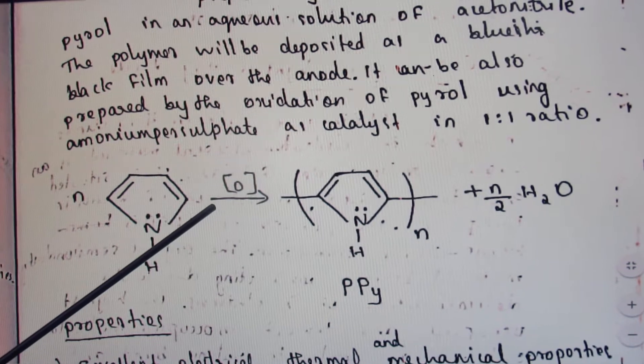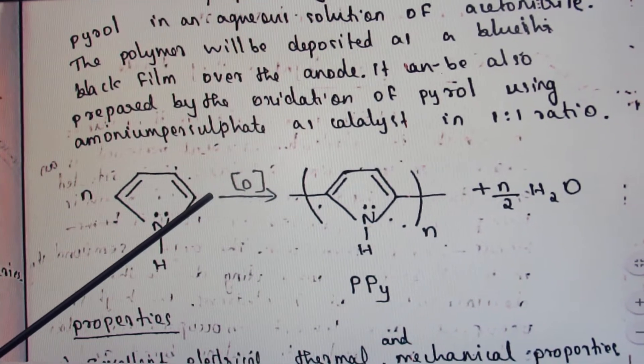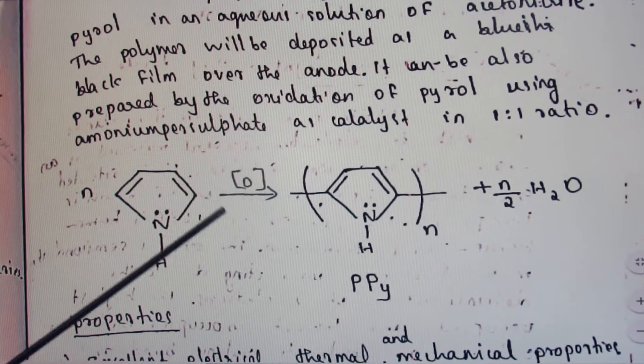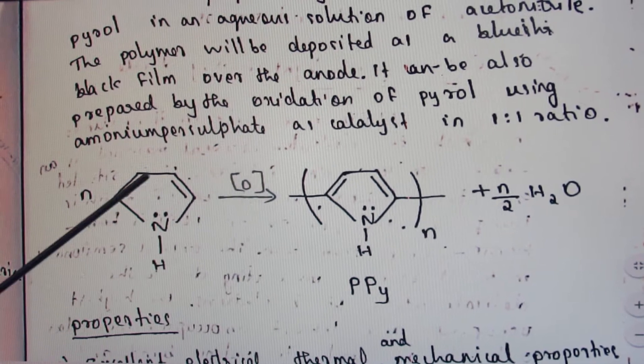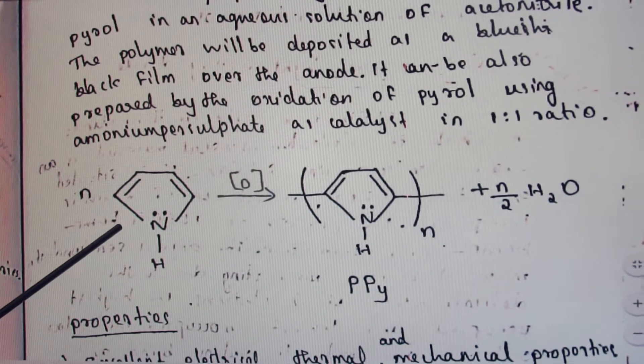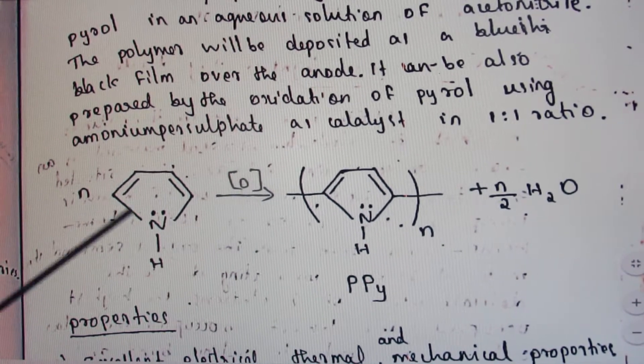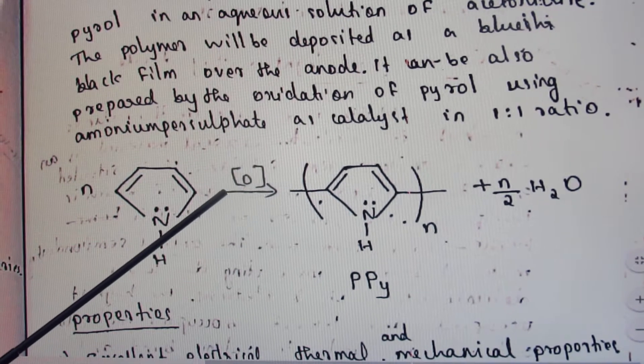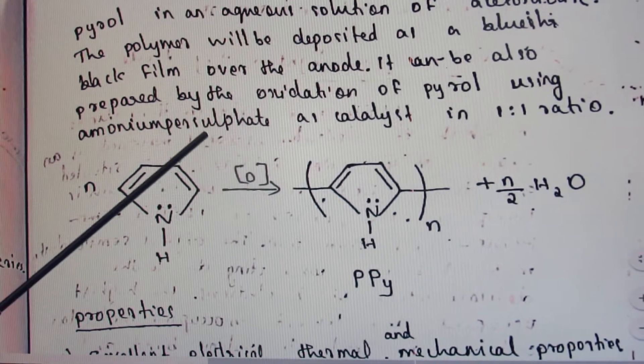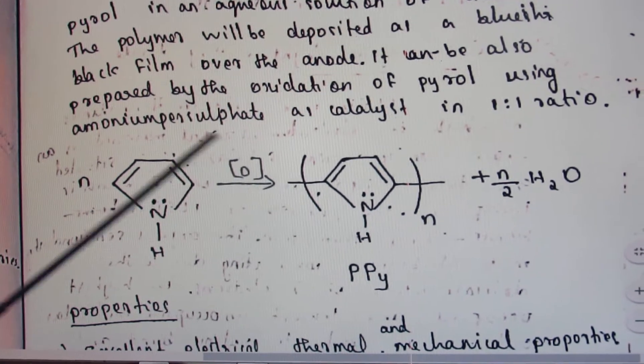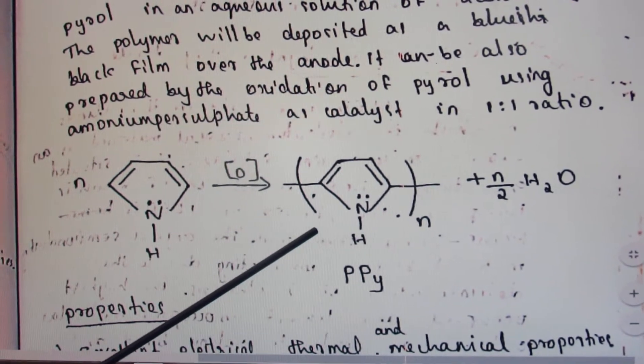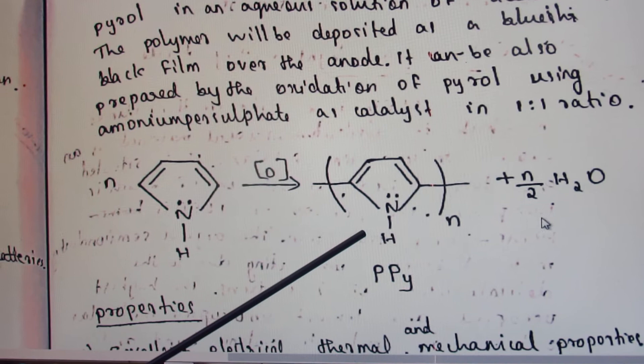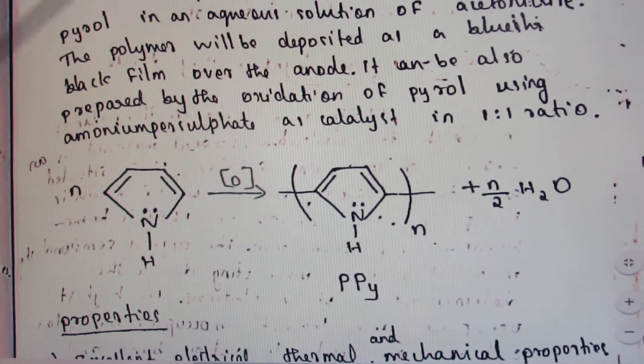Oxidative polymerization is done in the presence of nascent oxygen. The monomeric unit is pyrrole, which undergoes polymerization with ammonium persulfate as catalyst. The product is polypyrrole, and the byproduct is H2O.